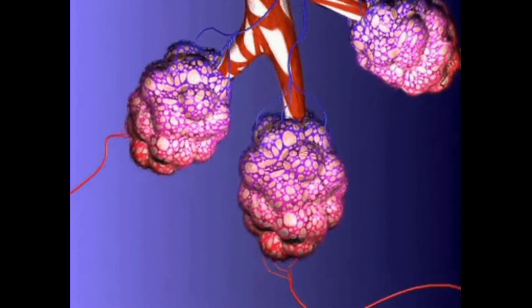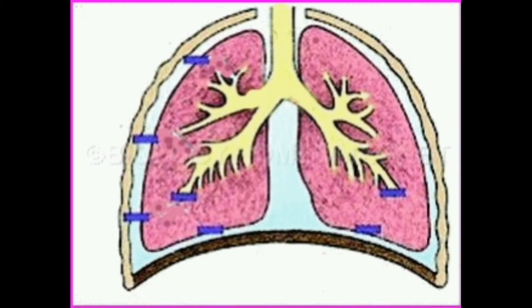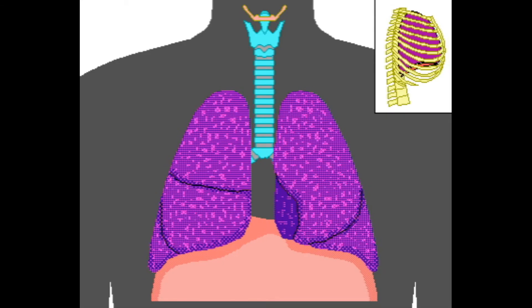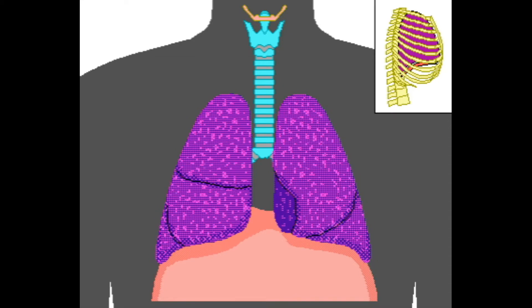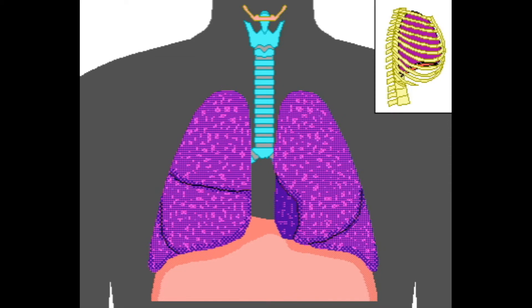Let us see how chemical control takes place in respiration. Large numbers of chemoreceptors are located in the carotid bodies, which are located bilaterally in the bifurcations of the common carotid arteries.